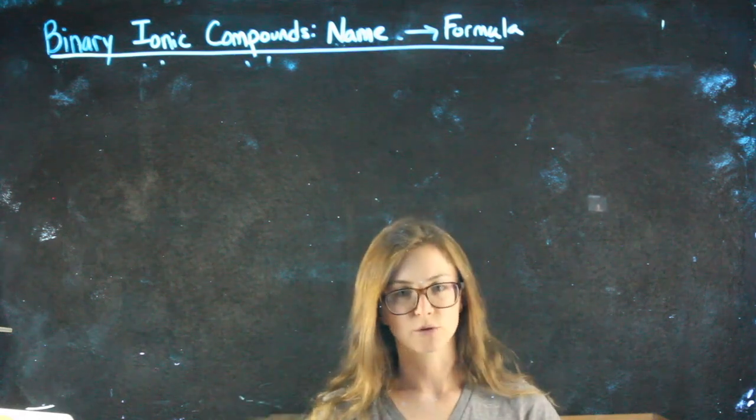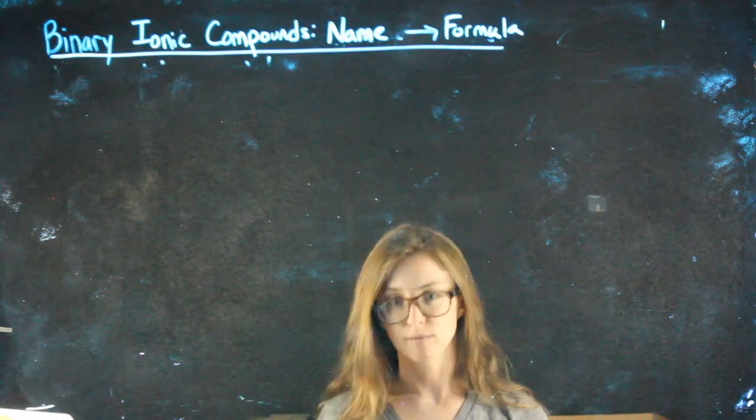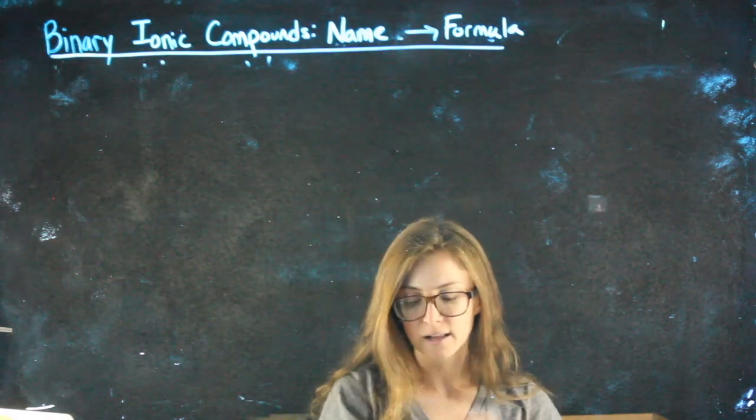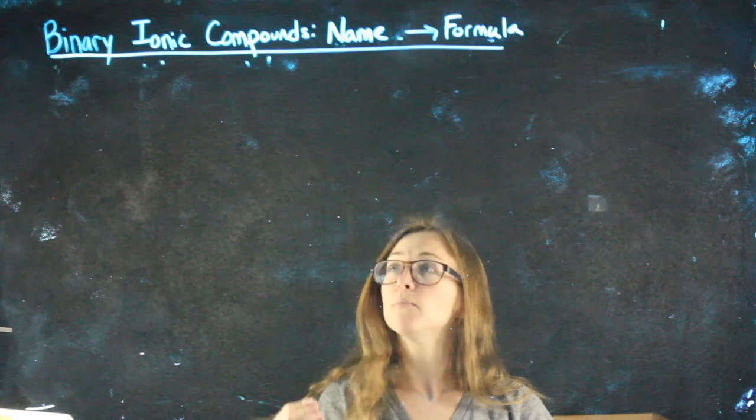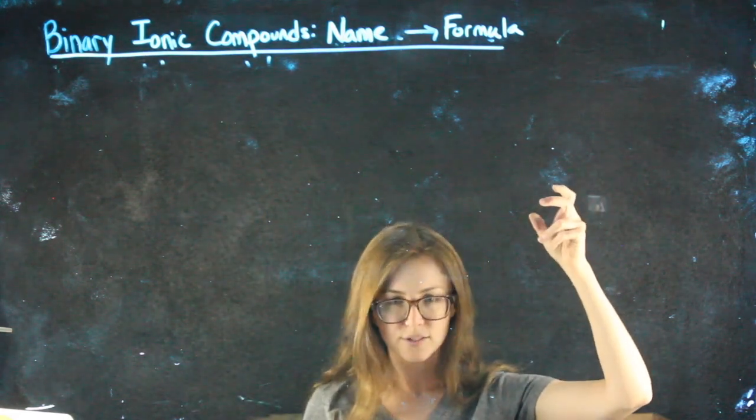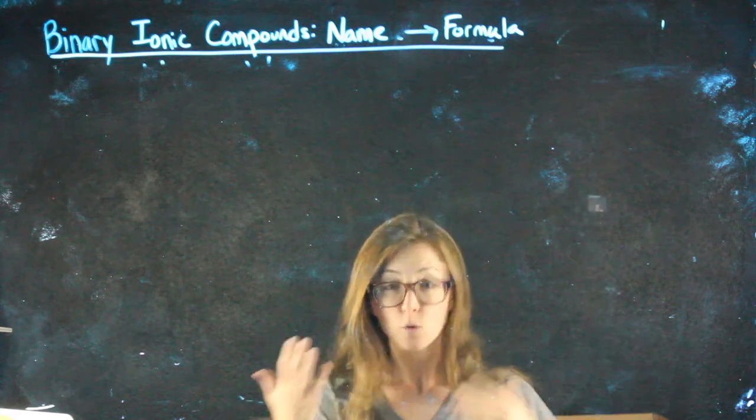Okay, in order to go the other direction, where I give you a name like sodium chloride and you can come up with a formula like NaCl, we need to understand a little bit more about what ionic bonding is and what these charges, these positives and negatives that you saw on the polyatomic ions, what those mean.